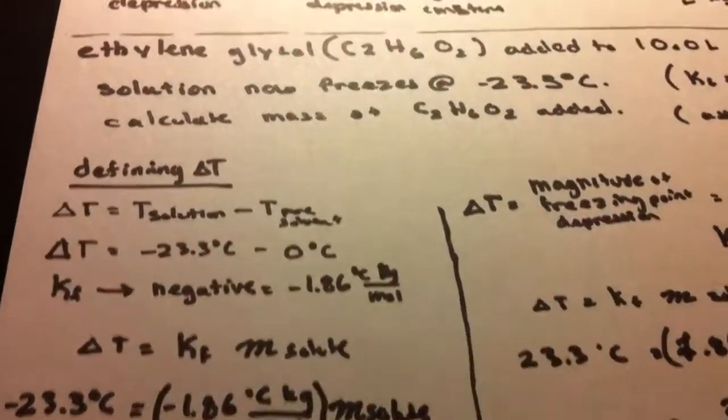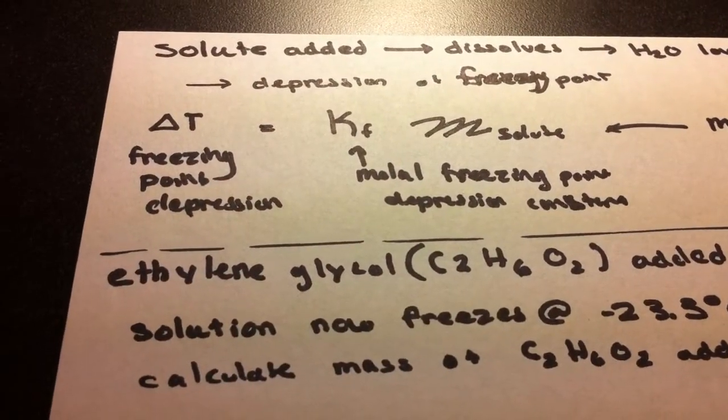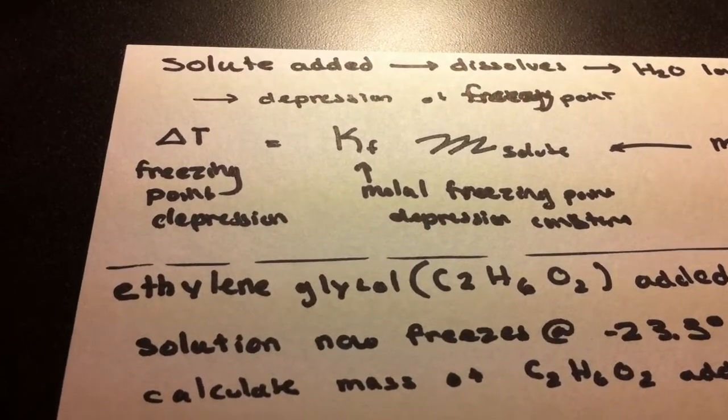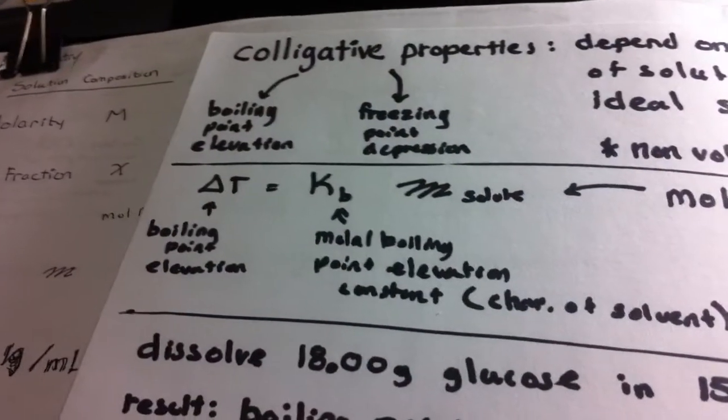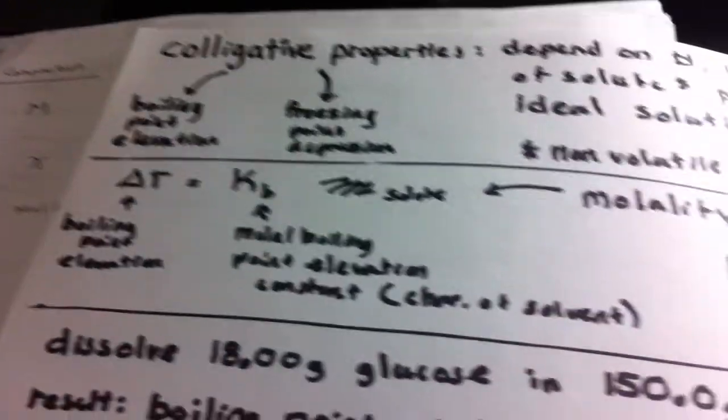So in review, we just calculated, or rather, we just applied delta T equations for boiling point elevation and freezing point depression.